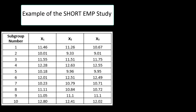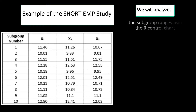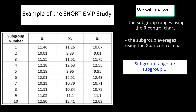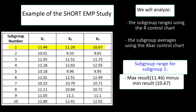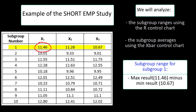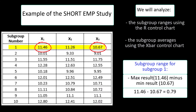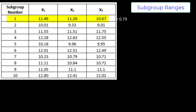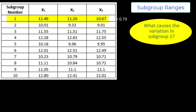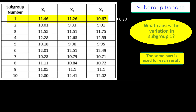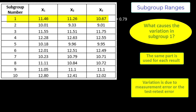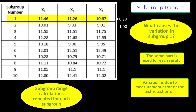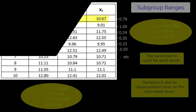Continuing with our example, we're going to begin by looking at the range control charts. We're going to analyze the subgroup ranges using the R control chart. The subgroup range for subgroup 1, highlighted in yellow, is simply the maximum minus the minimum for that subgroup. The maximum is 11.46, the minimum is 10.67, so the range for our first subgroup is 0.79. What causes variation within subgroup 1? Since the same part is used, the variation is simply due to measurement error — the test-retest error. The range is the variation in the measurement. Then you calculate the subgroup ranges for all subgroups.